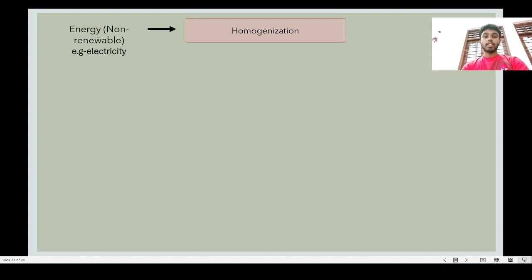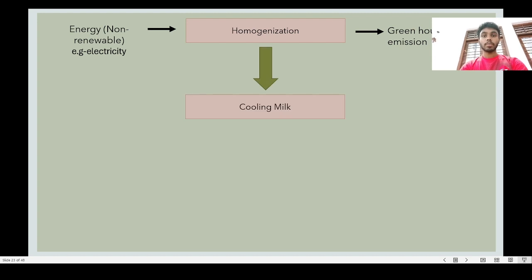Homogenization is the fourth step of yogurt production. Energy sources used are non-renewable such as electricity, and greenhouse gases like carbon dioxide and nitrous oxide are released in this process. To maintain the quality of the yogurt, cooling the milk is done as the fifth step. The energy sources used are non-renewable, and heat from the machines and air emissions occur as output.